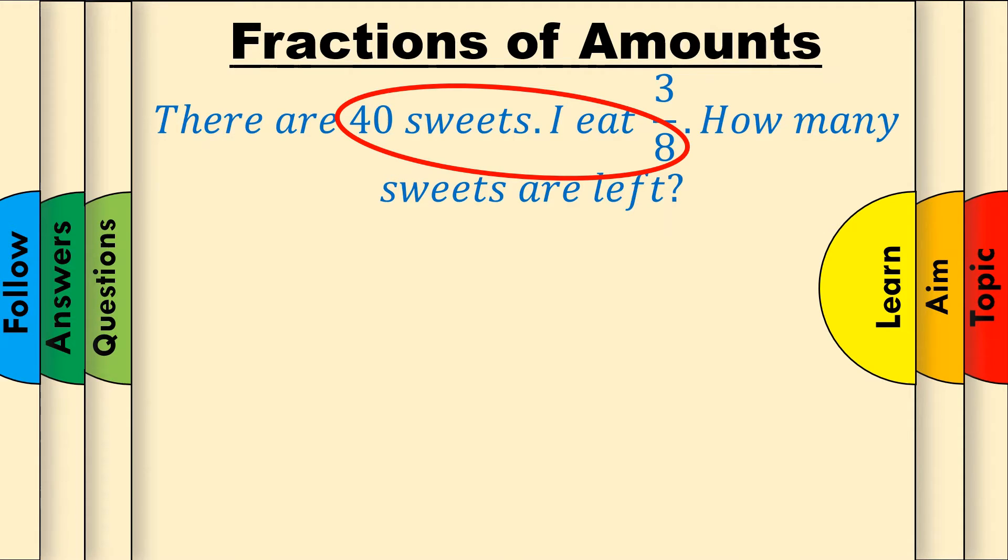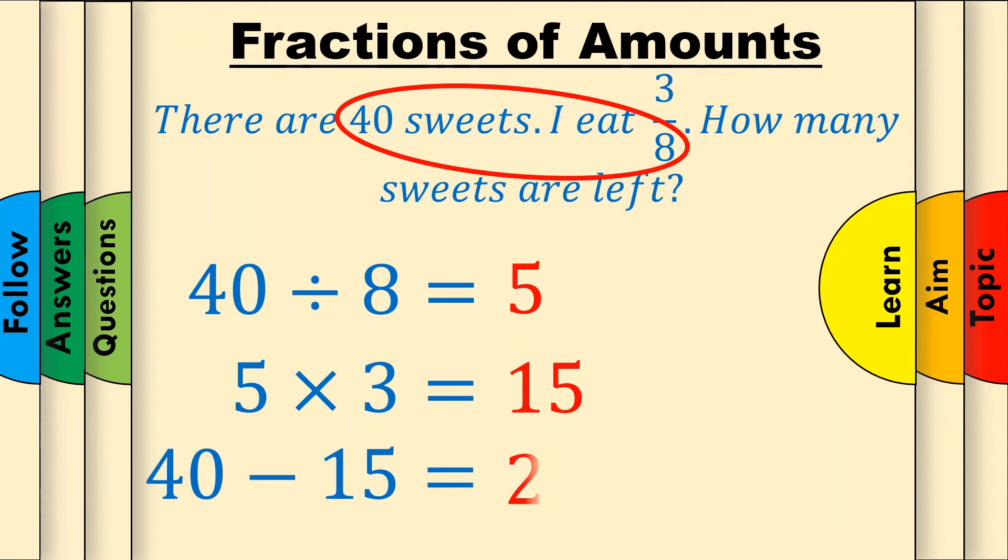So, first, divide the amount, 40, by the denominator of the fraction, 8. This gives us 5. Now, multiply this by the numerator of the fraction, which is 3. This gives us an answer of 15. 40 subtract 15 is 25, so there are 25 sweets left.